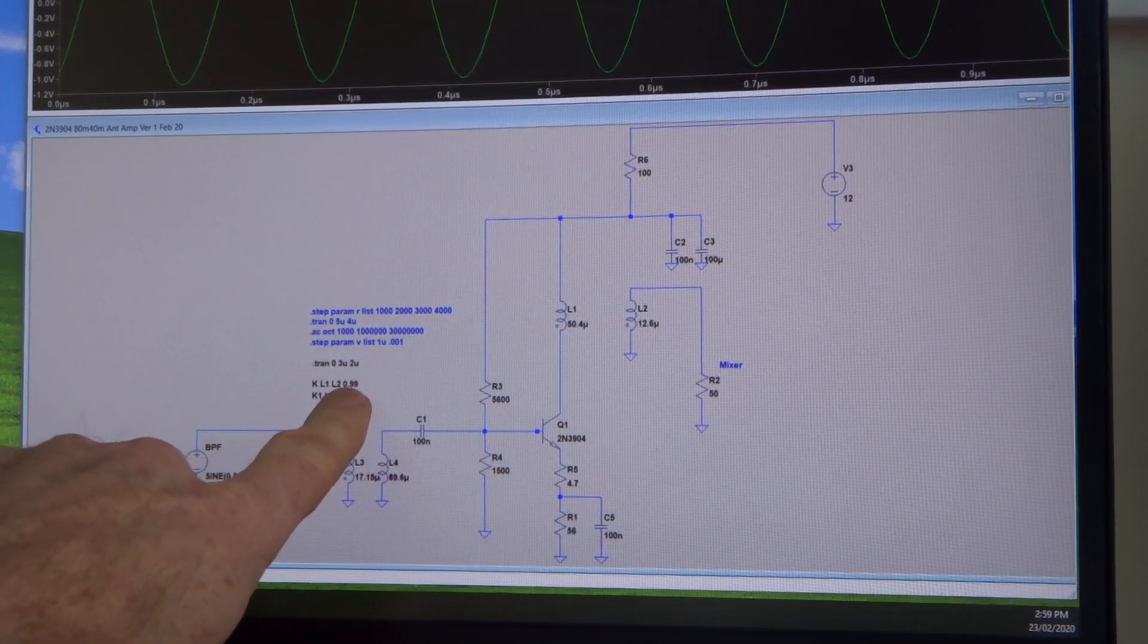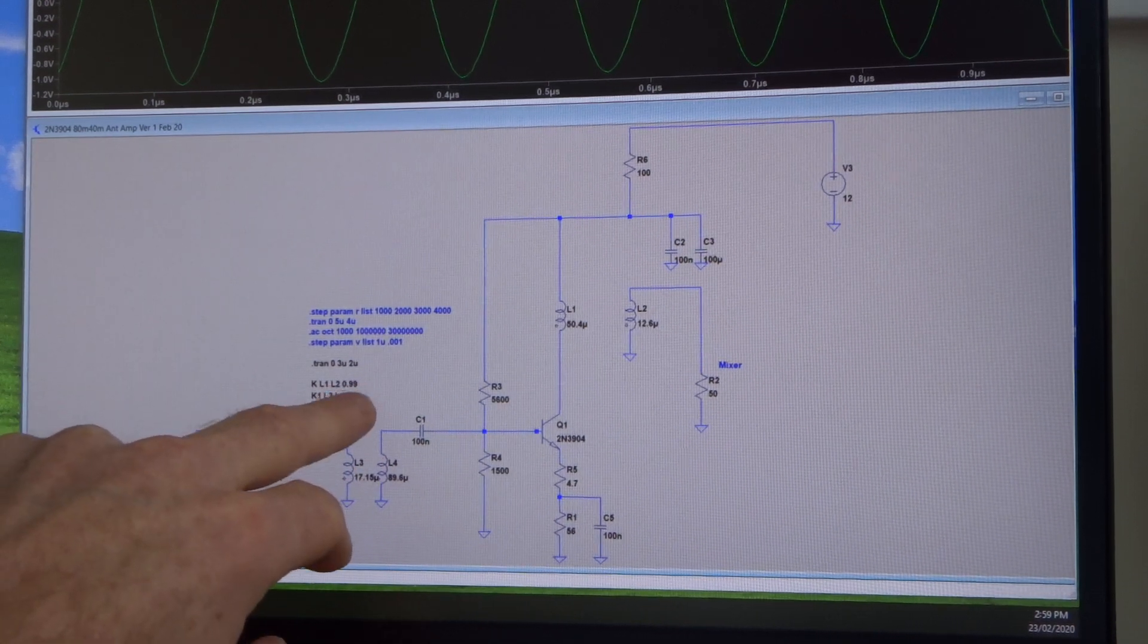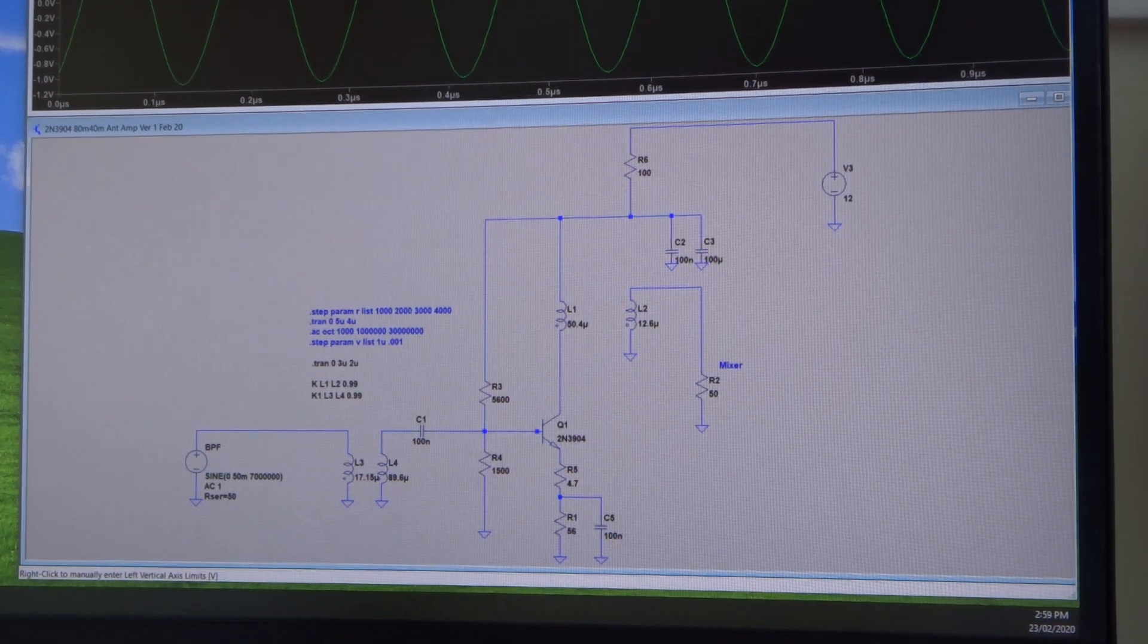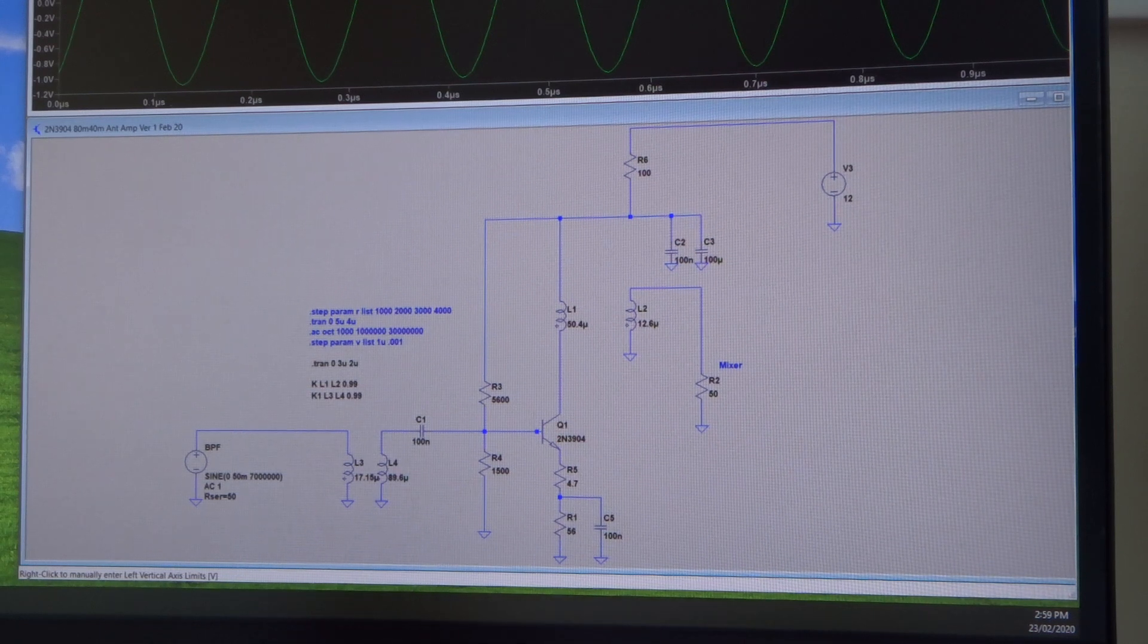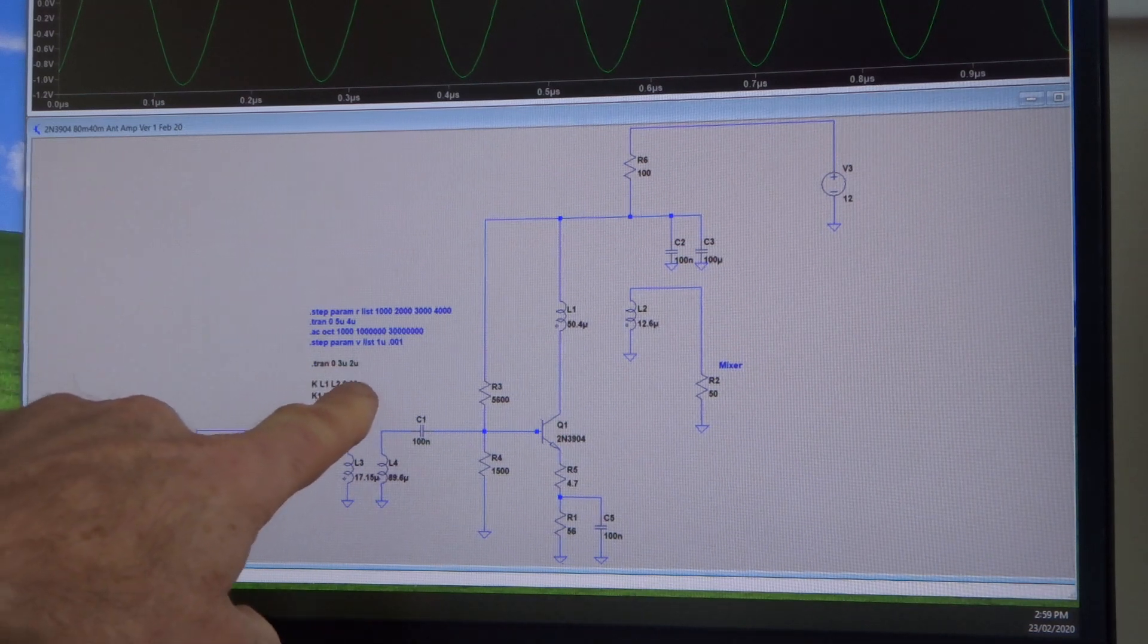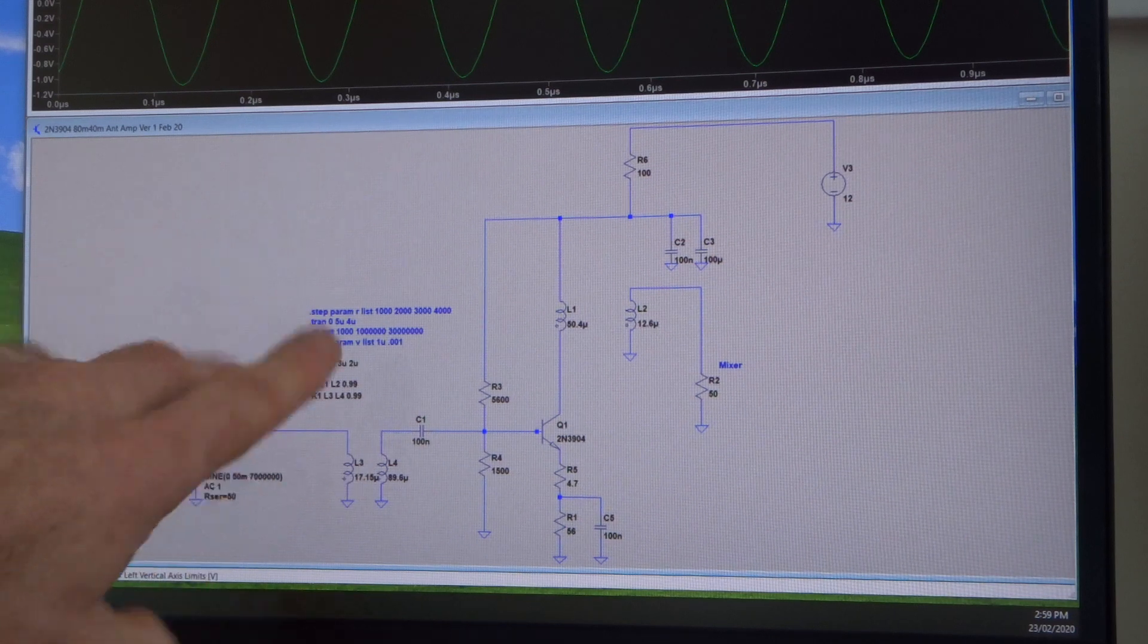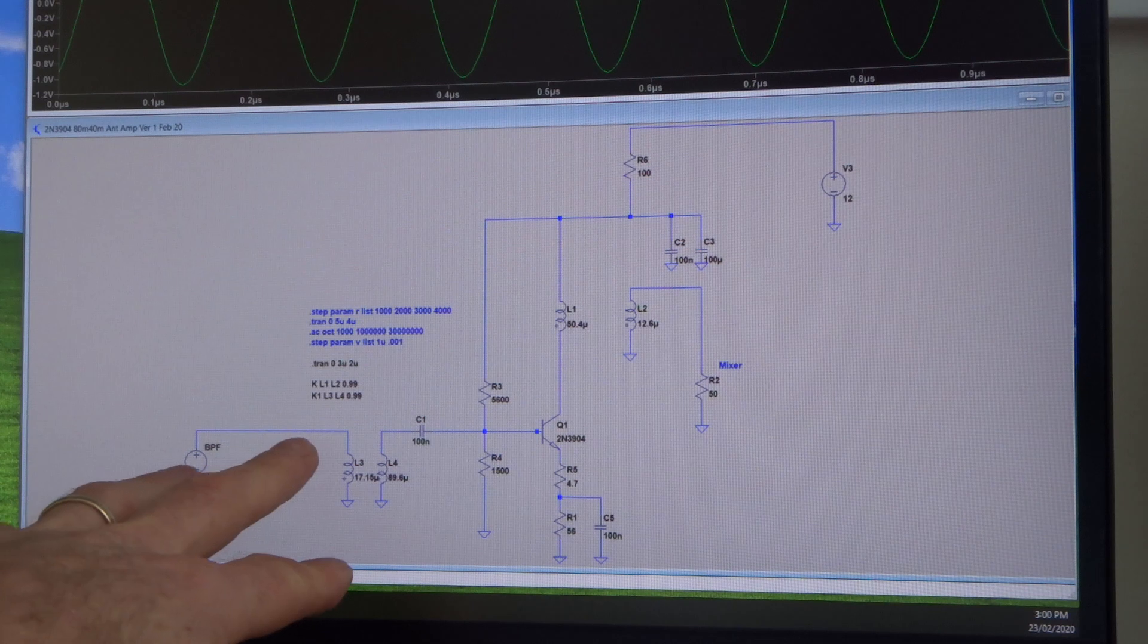For interest, I'm now using for the coupling factor for the transformer 0.99. In the past, for quite a while I was using 1 - well that's unrealistic, you don't have a coupling factor or coefficient of 1. So I've been using 0.99 and certainly the results seem to be a lot closer to what's actually happening in reality.